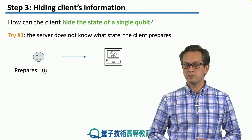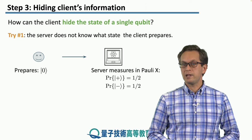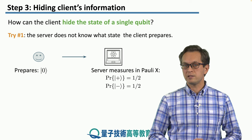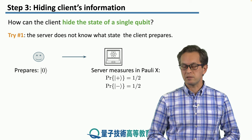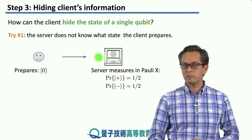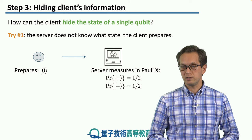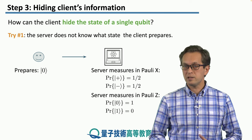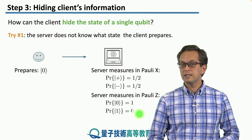Let's say that the client prepares the state |0⟩ — the plus-1 eigenstate of the Pauli Z matrix — and the server would like to know what the state is. Let's say that the server is malicious and tries to find out what states the client is communicating. The server could measure in the Pauli X basis: the probability of obtaining a plus outcome is one half, and the probability of obtaining a minus outcome is also one half. Or maybe the server chooses to measure in the Pauli Z basis — in that case the probability of getting 0 is 1 and the probability of getting 1 is 0.